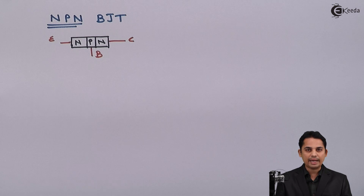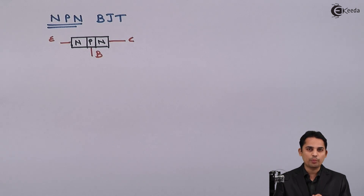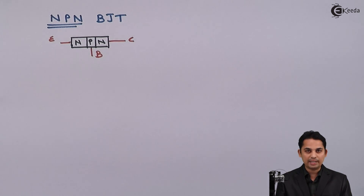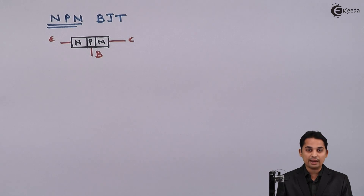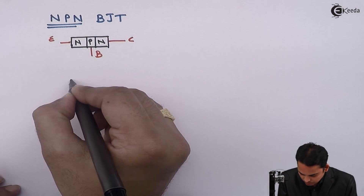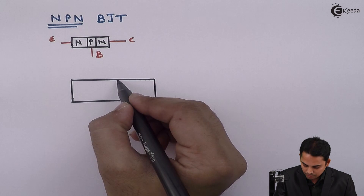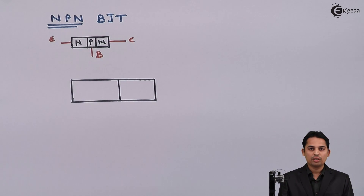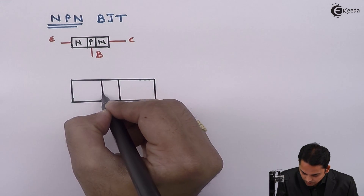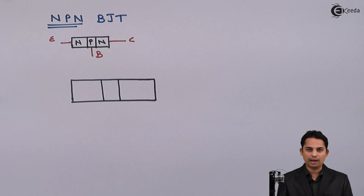This is how we can differentiate between collector and emitter. The next is base. Actually, base does not require more area, but it does require some amount of doping. Now, constructing the BJT depending upon area: collector should have maximum area, base will have minimum area, and emitter will have medium area.